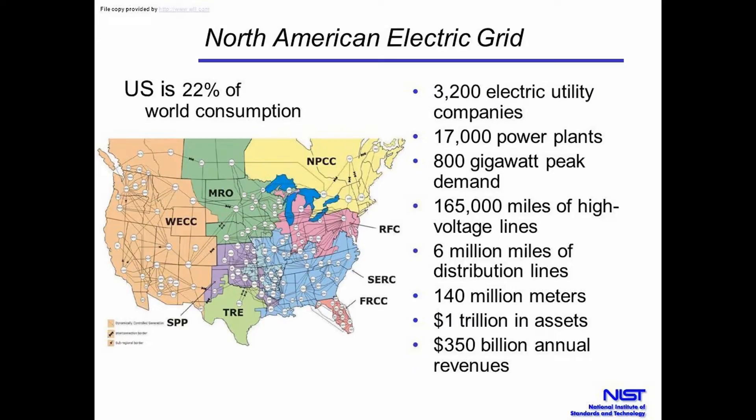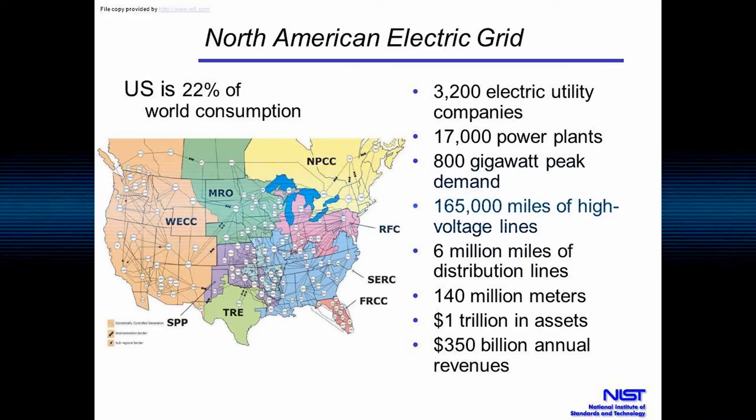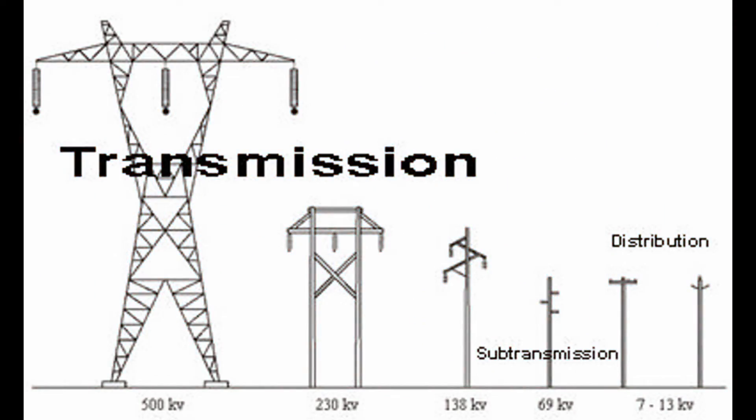There are over 3,000 electric utility companies, 17,000 power plants, and over 165,000 miles of high-voltage lines — where high voltage means 100,000 volts (100 kV) and above. You have 230 kV lines, 345 kV lines, 500 kV lines, and 765 kV lines coming in. And that's just the big stuff — not counting distribution, sub-transmission, industrial, and residential infrastructure. There are over six million miles of distribution lines, 140 million meters, and over a trillion dollars in assets.